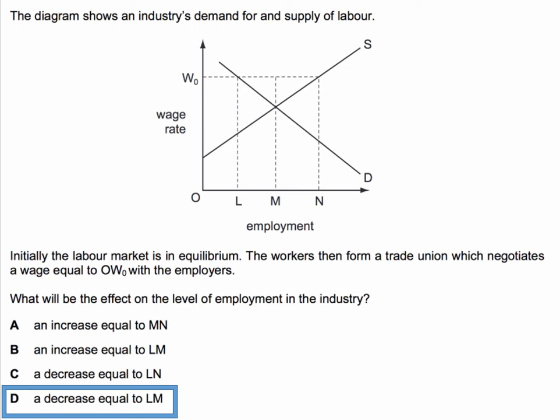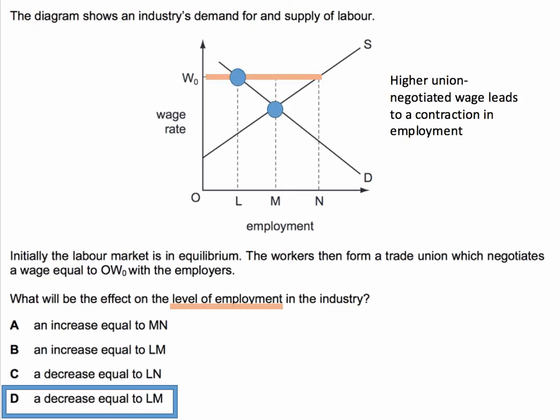The key to this, as I say, is that it asks about employment. So initially in equilibrium, M people are employed. If the union negotiates a higher wage — obviously W0 lies above the equilibrium wage — employment will contract. We move up the demand curve for labour to output level L. So employment has fallen by LM.